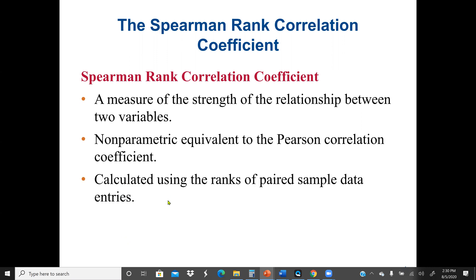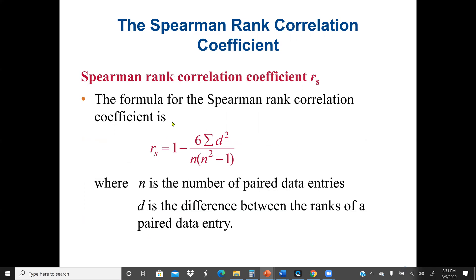Here we calculate using the ranks of paired sample data entries. We denote the Spearman rank correlation coefficient as R-sub-s, while in the Pearson correlation coefficient we use the symbol R. The formula is: 1 minus 6 times the sum of D-squared, divided by N times (N-squared minus 1).